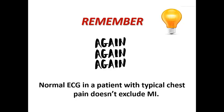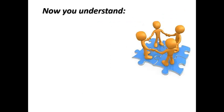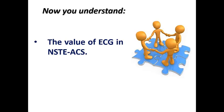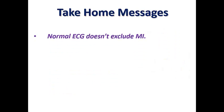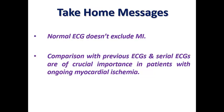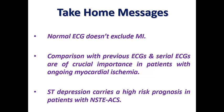At the end of this introductory lecture to non-ST, we understood the value of ECG in non-ST ACS and the common ECG features including normal ECG, ST-segment depression, T-wave changes, and transient ST elevation. Take-home messages: normal ECG does not exclude MI; comparison with previous ECG and serial ECGs are crucial in patients with ongoing ischemia; ST depression carries the highest prognostic risk in non-ST ACS. Thank you very much for watching.